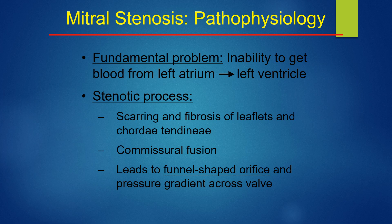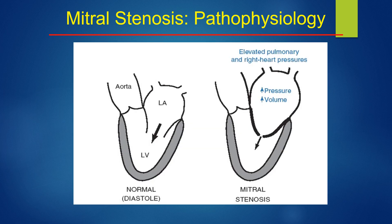The fundamental problem is the inability to get blood from the left atrium to the left ventricle. The stenotic process involves scarring and fibrosis of the leaflets and chordae tendineae, commissural fusion, leading to a funnel-shaped orifice and a pressure gradient across the valve, with increased pressure and increased volume in the LA.